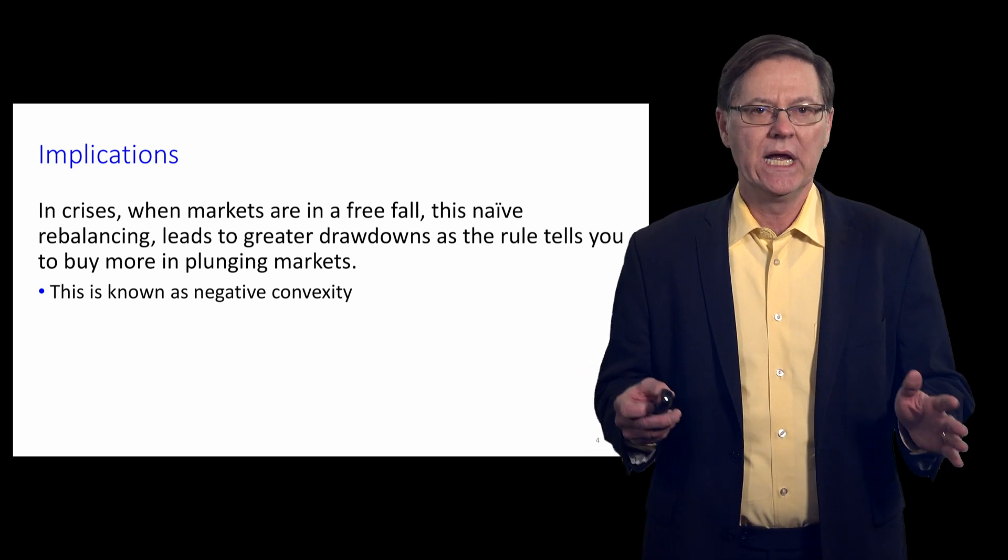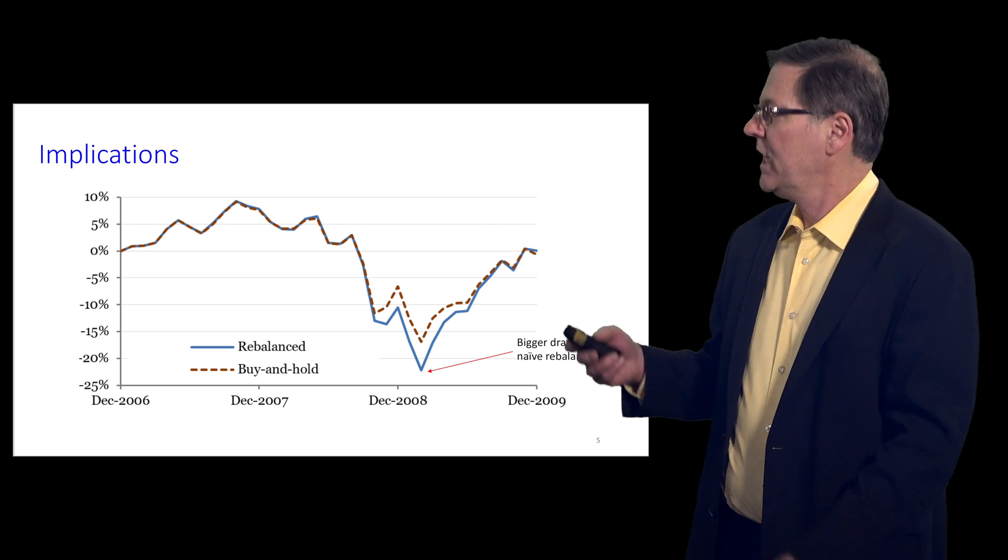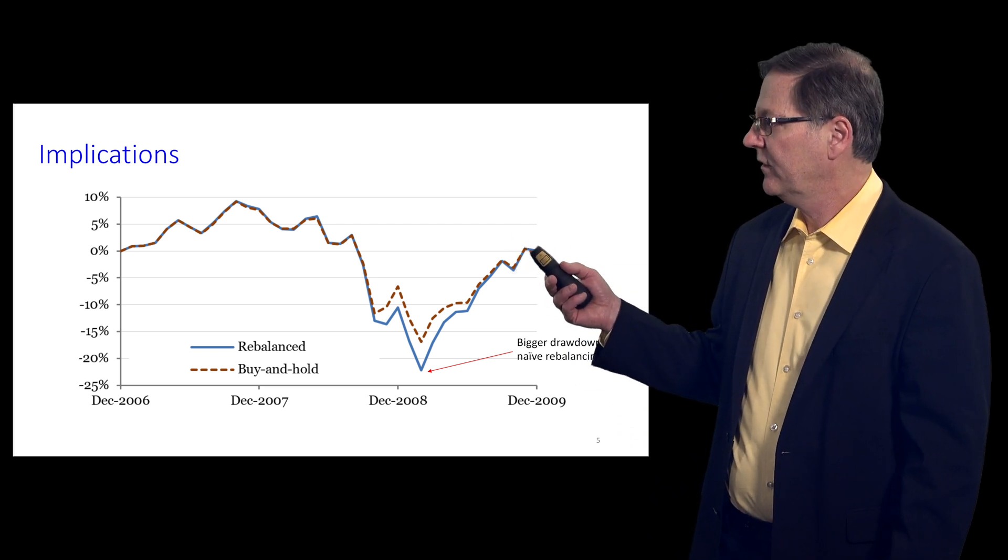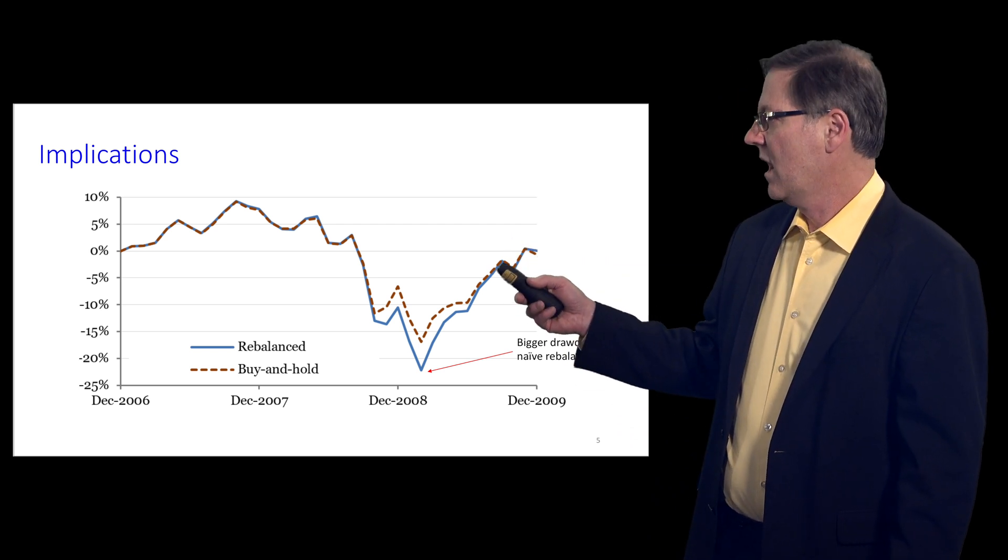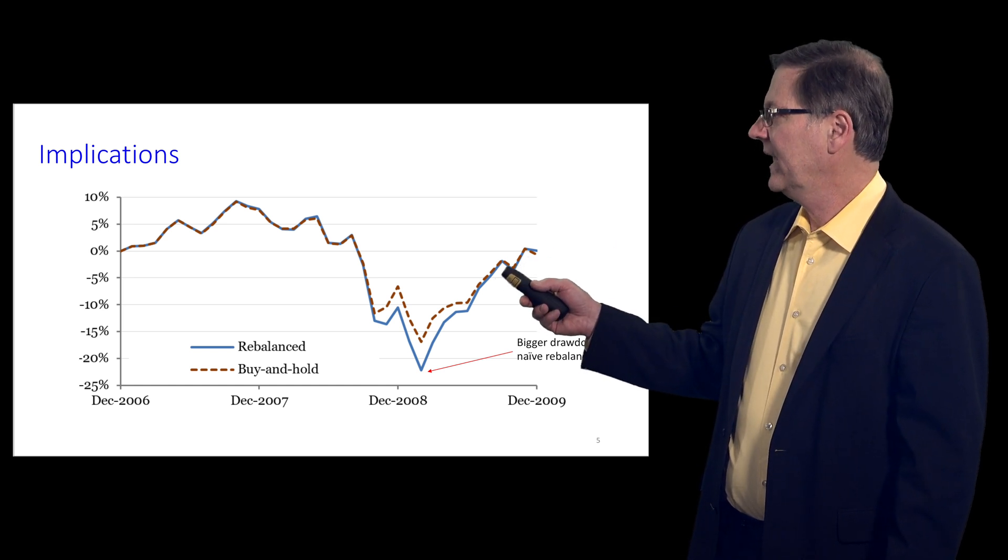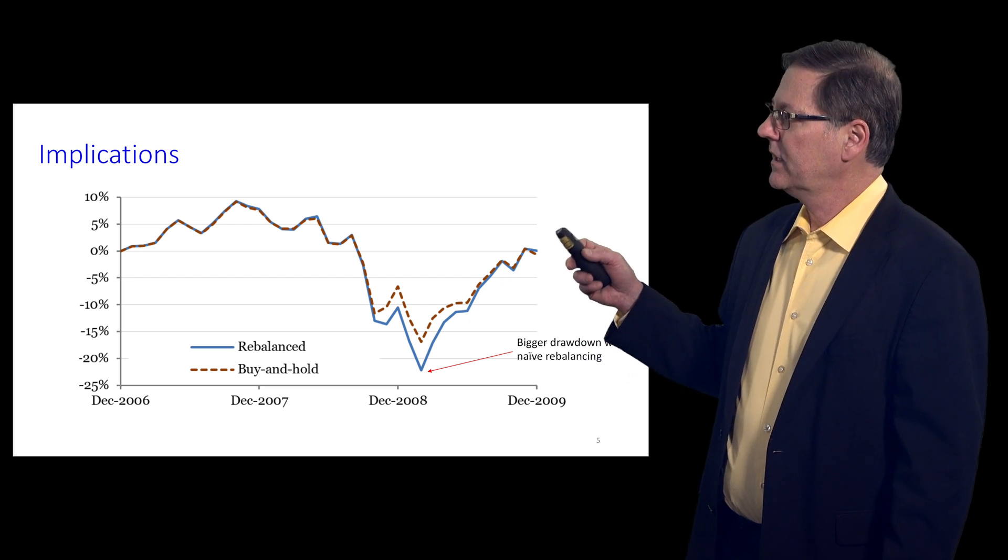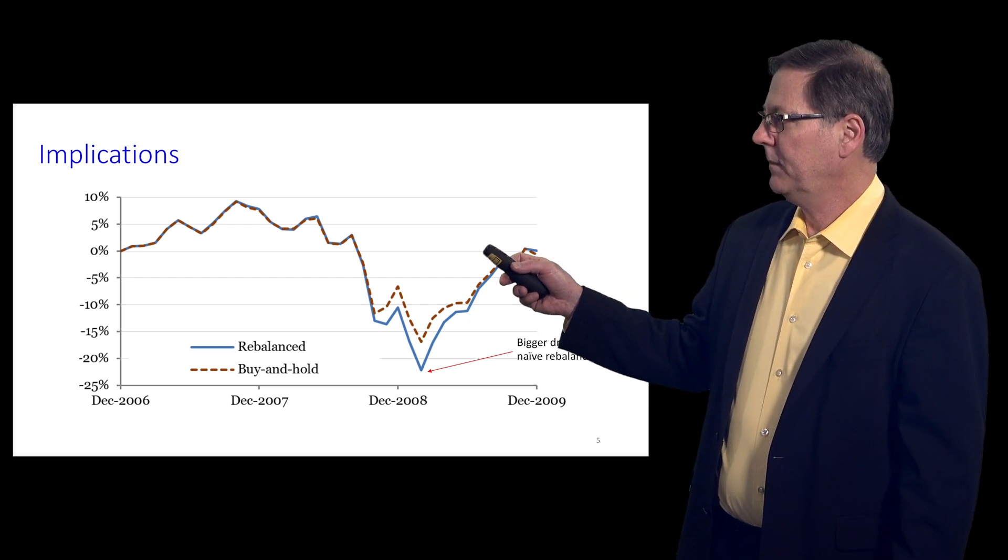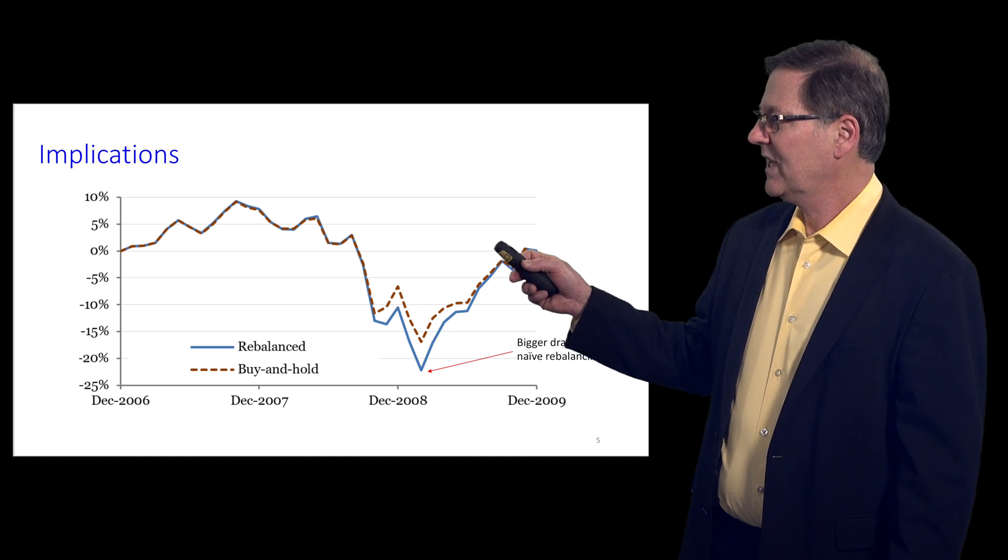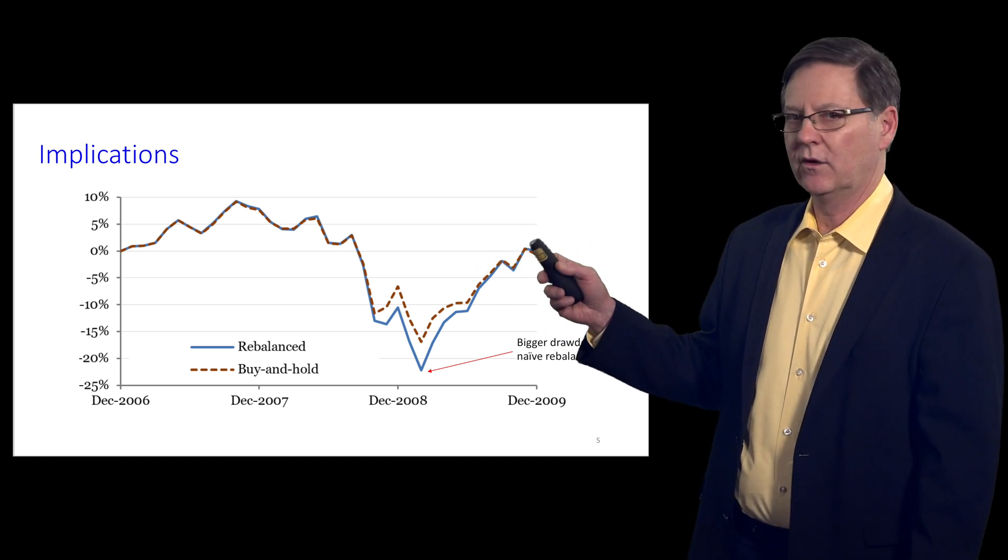This is sometimes called negative convexity. A good illustration is the global financial crisis. The solid line is the portfolio that is rebalanced to 60-40, and the dotted line is not rebalanced. You can see that the rebalanced portfolio leads to a much greater drawdown.